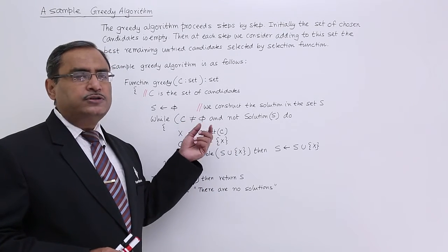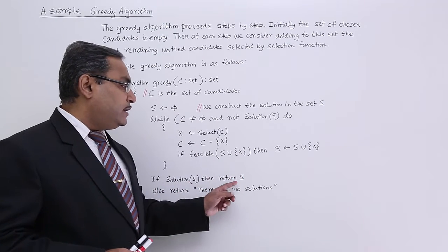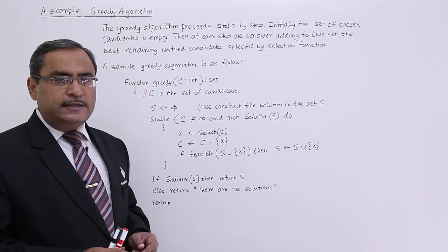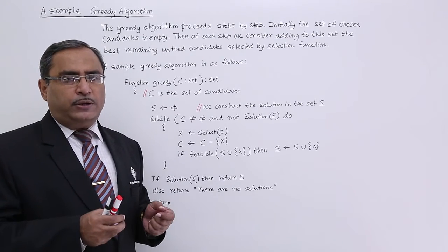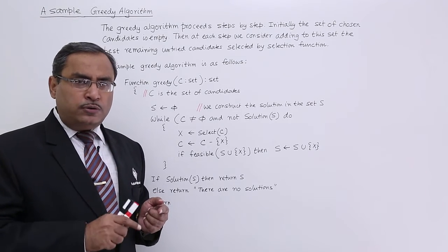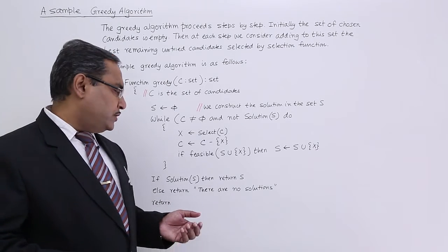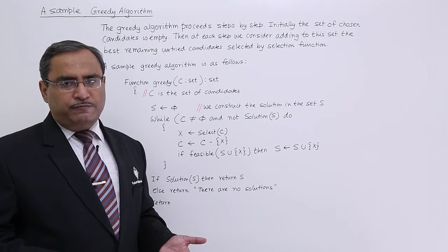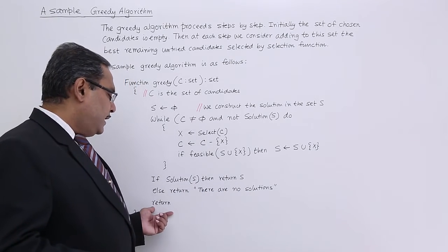Either the condition C not empty will become false, or the condition not solution(S) will become false, and we come out. After coming out, if solution(S), then return S — meaning if the set of considered and selected candidates can give us the solution. For example, if I have taken edges of a particular graph and through those edges I can reach the goal node from the start node, then I have a solution, so return S. Otherwise, return 'no solution found'.